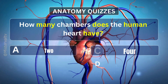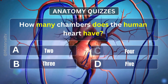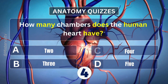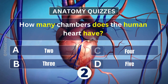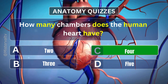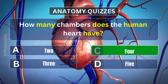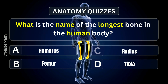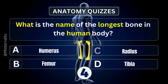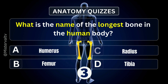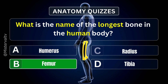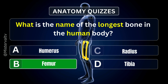How many chambers does the human heart have? Answer. C. 4. What is the name of the longest bone in the human body? Answer. B. Femur.